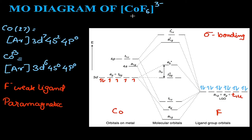Next we have CoF6^3-. Again, cobalt is a d^6 system here. Fluorine is a weak field ligand, so the magnitude of splitting will be very less. The ligand group orbitals are again a1g, eg, and t1u. These combine with the corresponding metal orbitals to give their respective bonding and antibonding molecular orbitals.